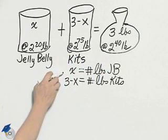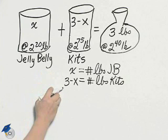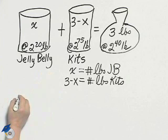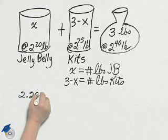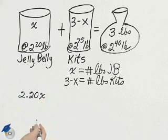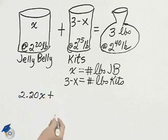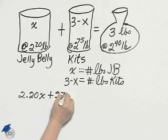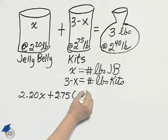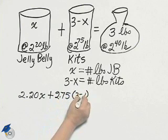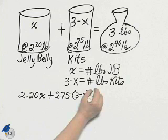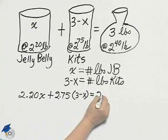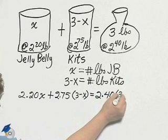We're going to let X be the pounds of Jelly Belly's, three minus X being the pounds of Kits. The value of the Jelly Belly's is $2.20 times the number of pounds. The value of the Kits is $2.75 per pound times the number of Kits. You do need parentheses. The value of the three pounds is $2.40 times the three pounds.